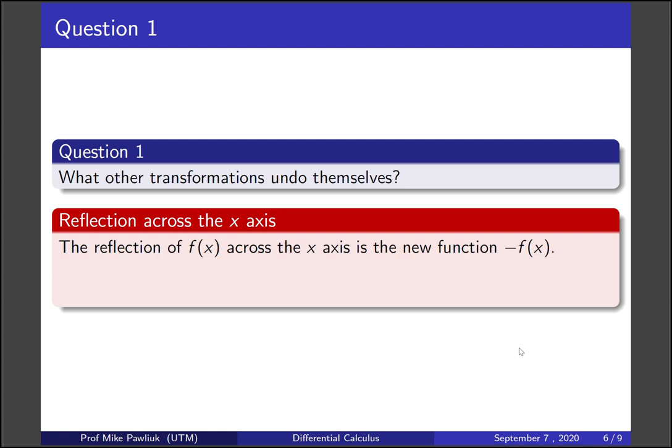If we take the minus sign outside, this corresponds to reflecting across the x-axis. The reflection across the x-axis is taking f(x) and getting -f(x). Now can you see what happens when you apply this twice? You'll get -(-f(x)), which will again cancel to just f(x). So we see that reflecting across the x-axis is also a type of transformation that undoes itself.